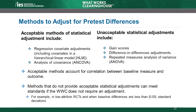These methods — ANOVA, difference-in-differences, repeated measures ANOVA, and gain scores — are acceptable ways to estimate impacts, but the WWC does not consider their statistical adjustments for baseline differences acceptable. Studies that use these analytic approaches and have baseline differences larger than 0.05 standard deviations do not meet WWC group design standards.